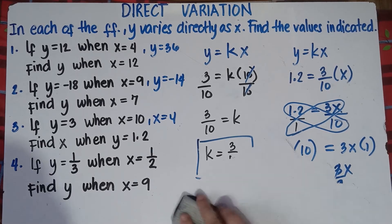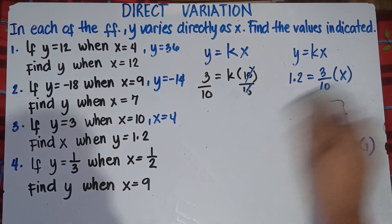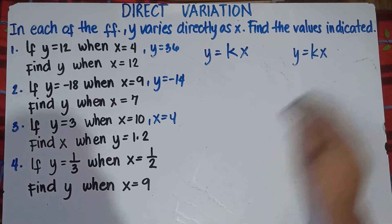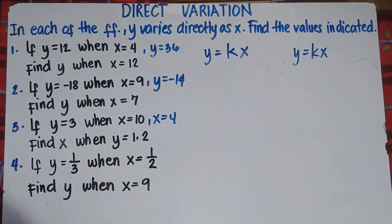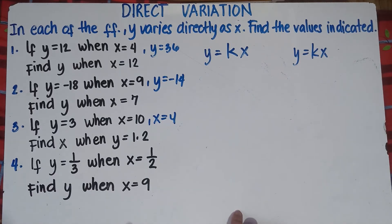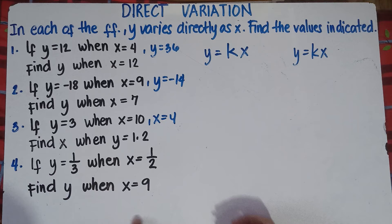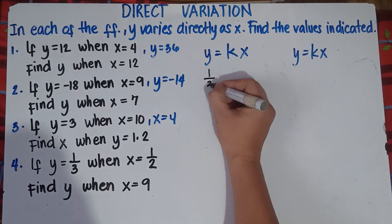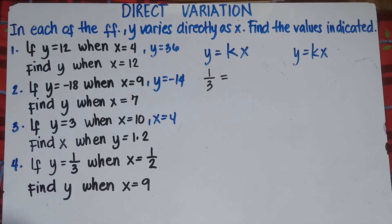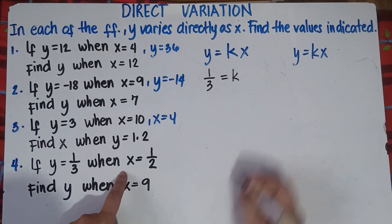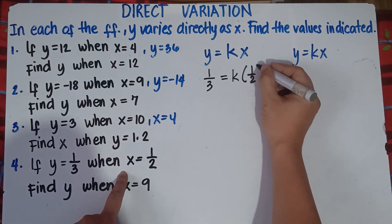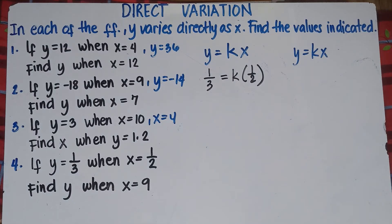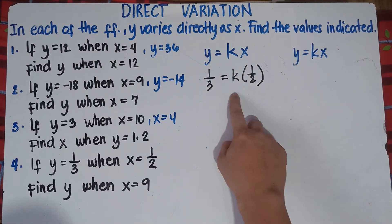Alright, let's try number 4. If y equals 1 third when x equals 1 half, find y when x equals 9. We have fractions — quite complicated. So y equals 1 third equals k times 1 half. We need to find k, so we have two solutions for this one.